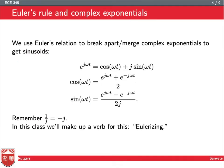So a handy-dandy tool is Euler's relation. So we use this to break apart or merge complex exponentials to get sinusoids. We combine sinusoids to get a complex exponential like e to the j omega t is cosine omega t plus j sine omega t. That's Euler's formula, one form of it. And we can also break apart cosines into complex exponentials by taking e to the j omega t plus e to the minus j omega t and then dividing by 2.